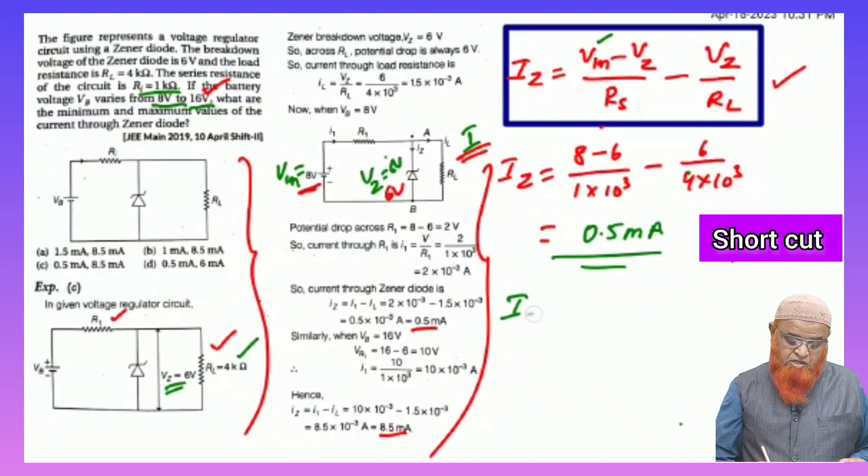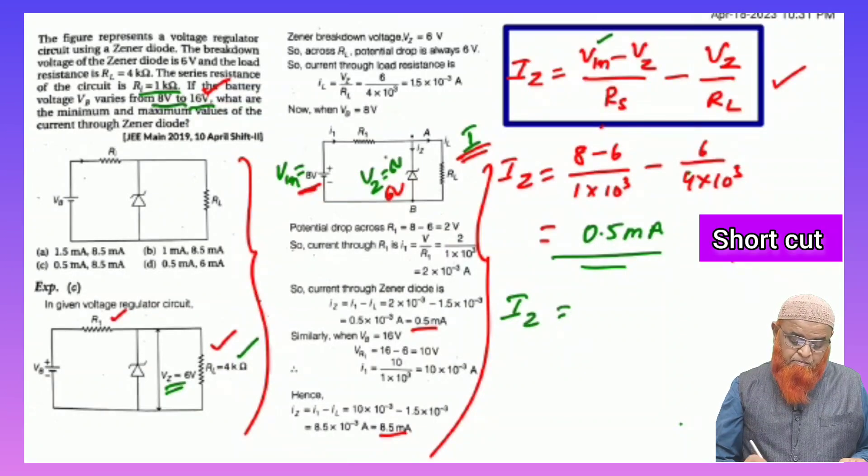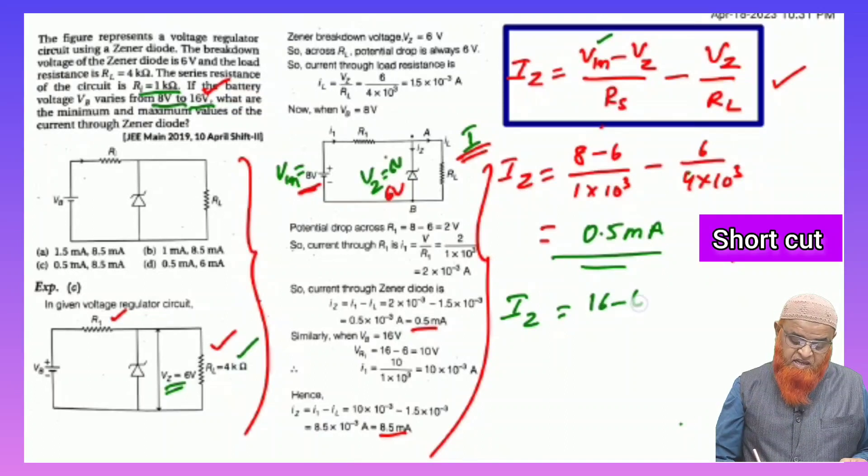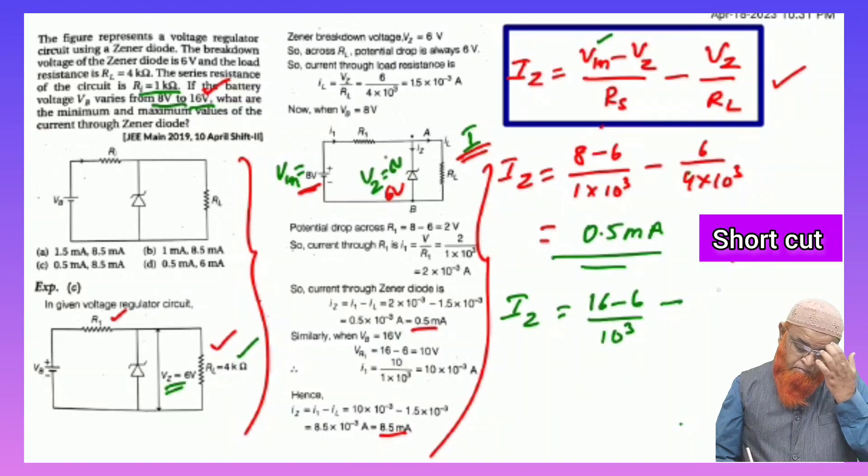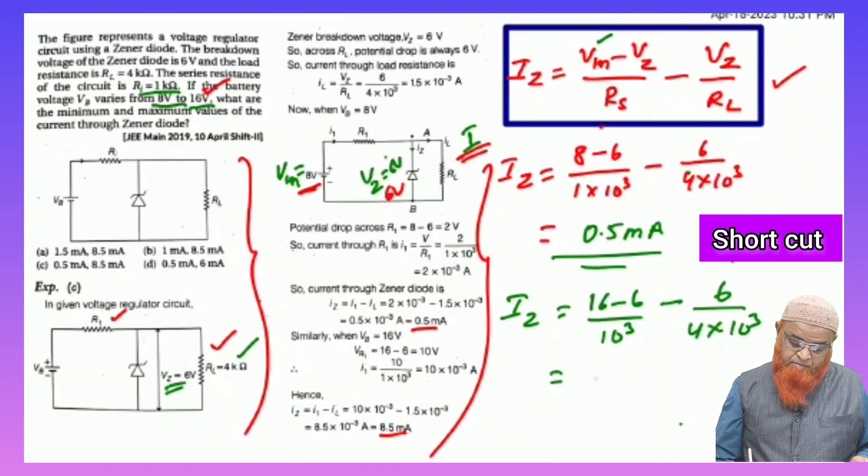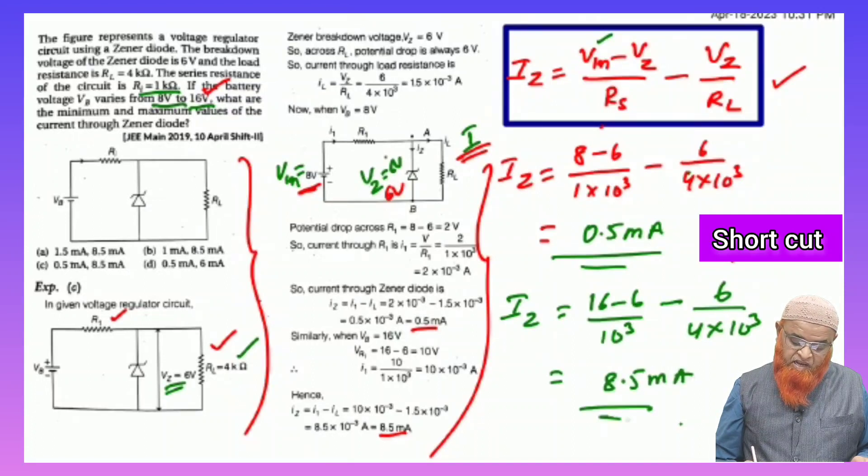In the second case also, you can apply the same formula, but in the second case, input is varying from 8 to 16. The second case, you have to take care of 16 here. 16 minus 6 by 10 power 3, minus VZ that is 6 by 4 into 10 power 3. So if you substitute here in the second case, you will be getting the answer as 8.5 milliampere.